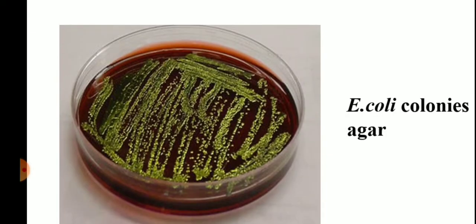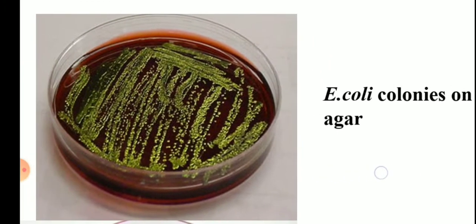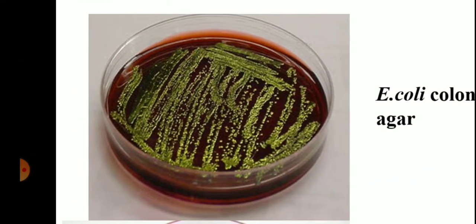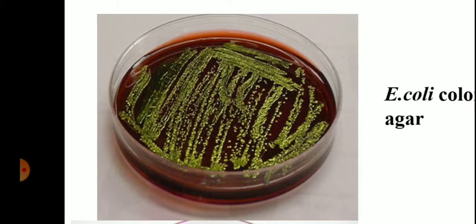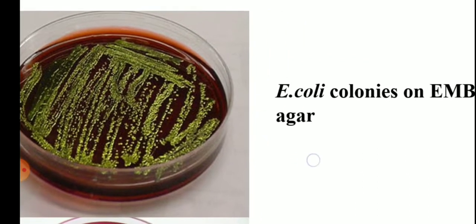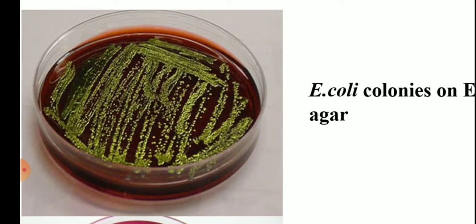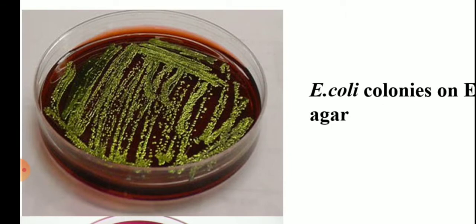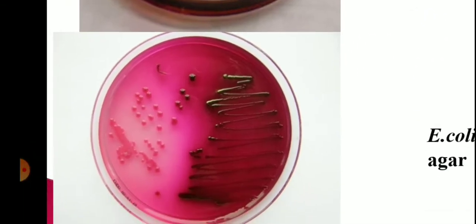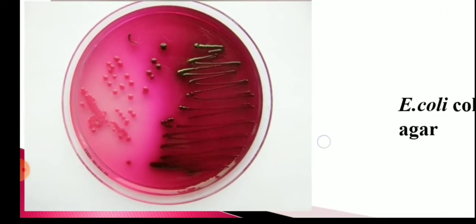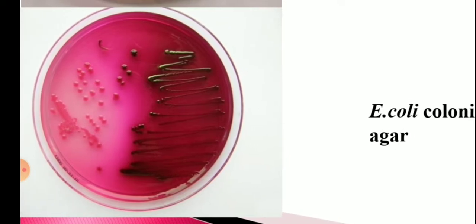Looking at the cultural characteristics of E. coli, it produces colonies with green metallic sheen on eosin methylene blue (EMB) agar. The colonies are purple, dark-centered with a green metallic sheen. On the surface of EMB agar, it again produces dark purple colonies with metallic sheen.